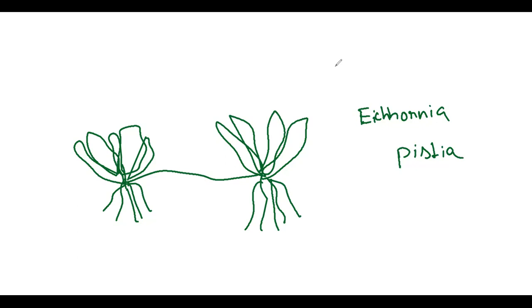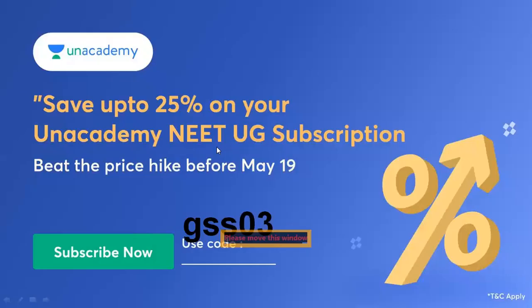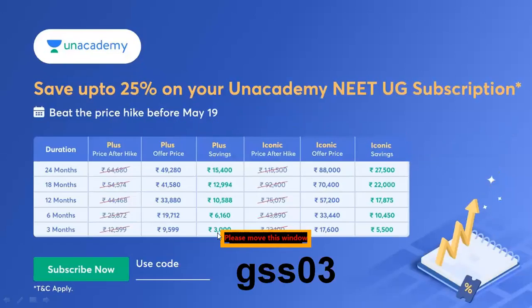They help for vegetative propagation, which is one type of asexual reproduction. In the coming videos, sexual reproduction - pre-fertilization, fertilization, post-fertilization. I hope the topic is clear. Use the referral code GSS03 to save with Unacademy subscription. Please do hurry up as Unacademy is India's largest learning platform. Thank you very much.